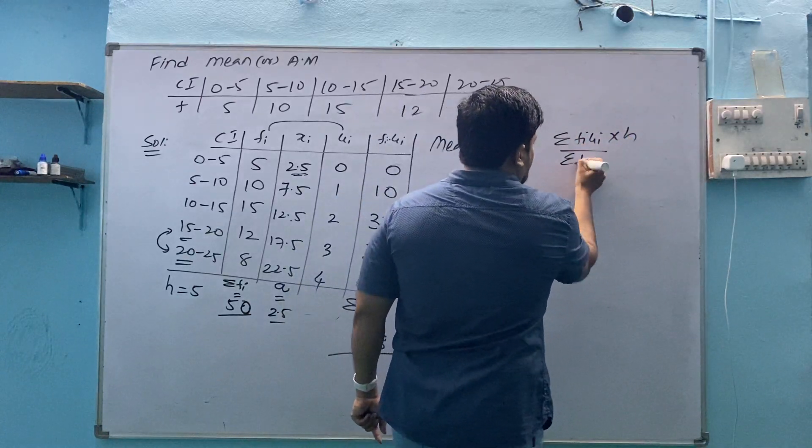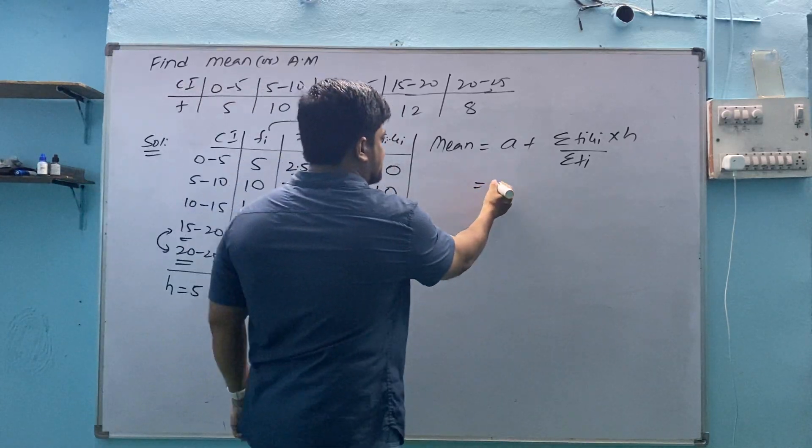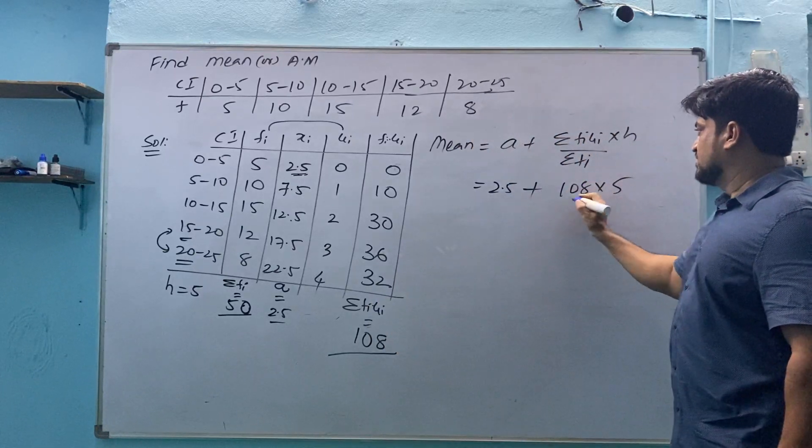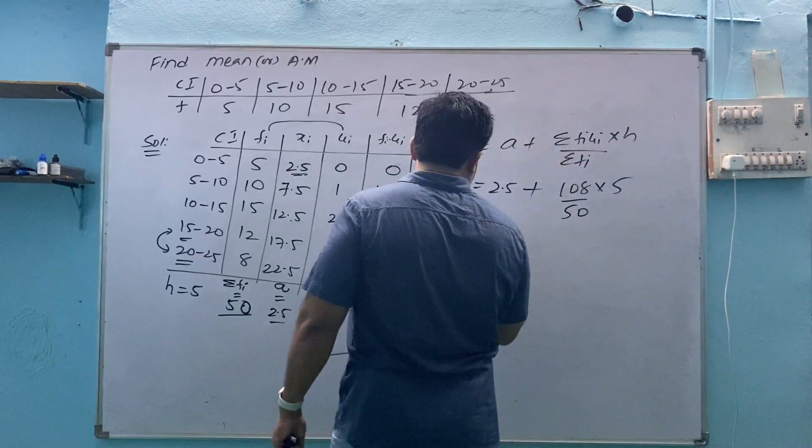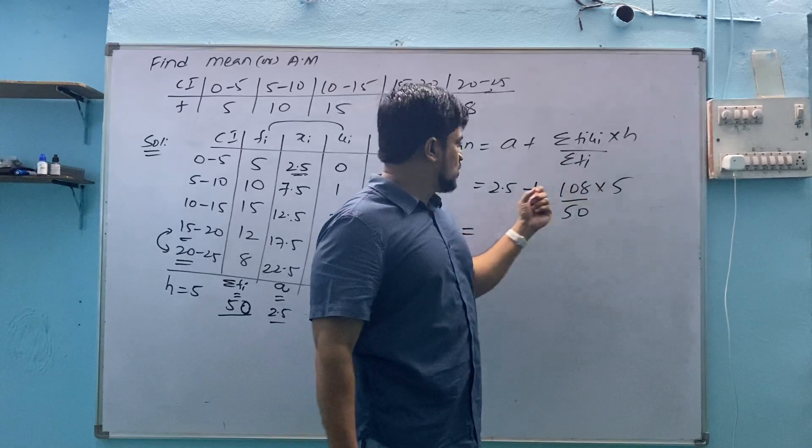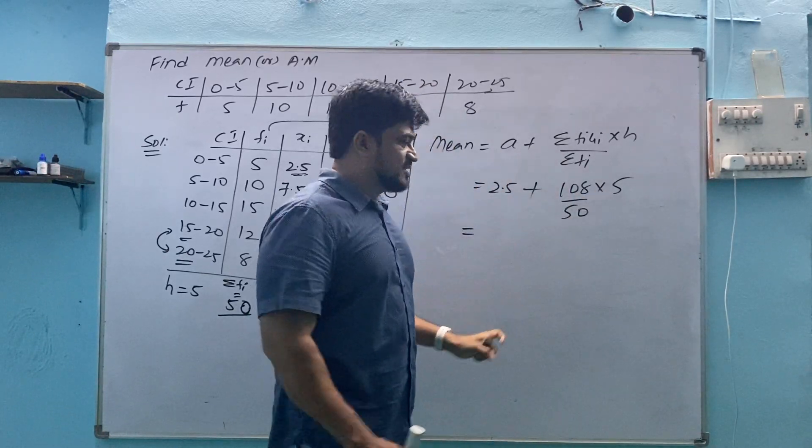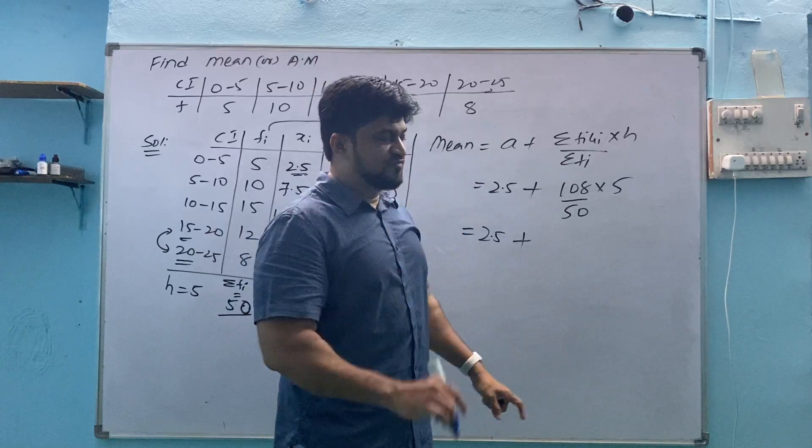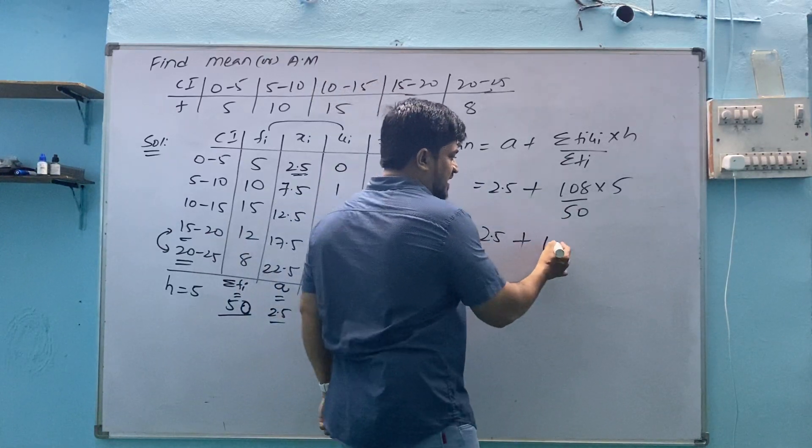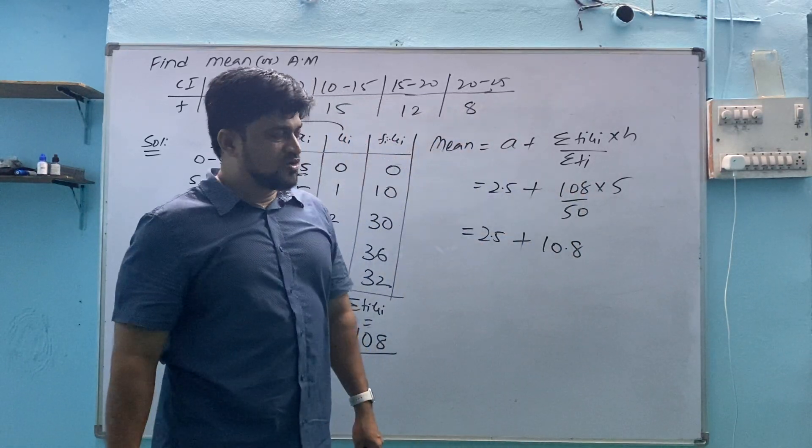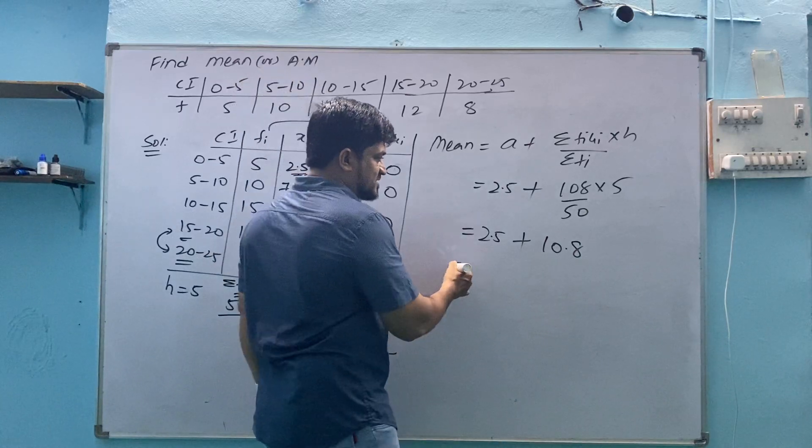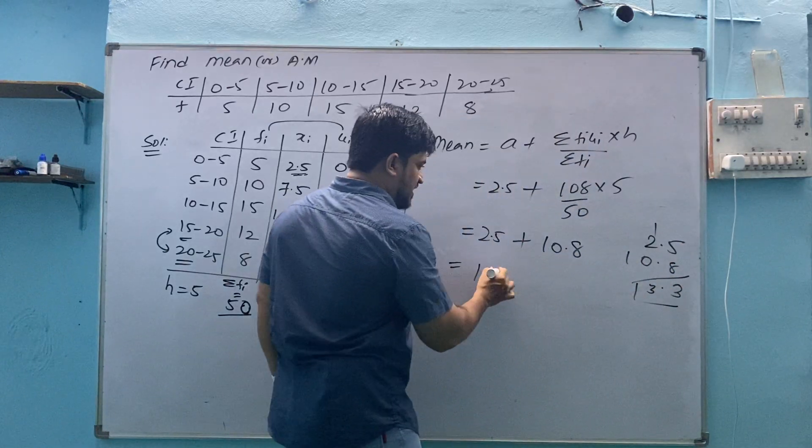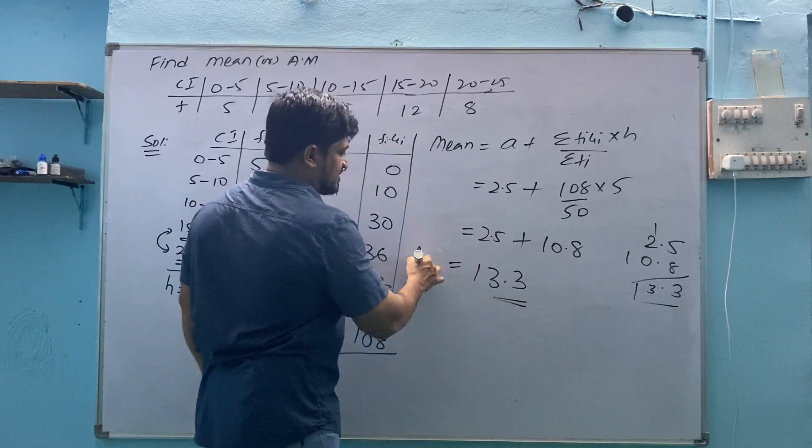A plus submission Fi Ui into H divided by submission Fi. A value is 2.5, sigma Fi Ui is 108, H is 5, by sigma Fi is 50. Now use calculator to multiply. Don't take this value first on calculator, this value is added at the end. I'll write this as it is. Multiply them: 108 into 5 then divide by 50, write the answer here. After dividing you will get 10.8. 108 by 10 is 10.8. Then this is, by using calculator, 2.5 plus 10.8 equals 13.3. 13.3 is the value for mean.